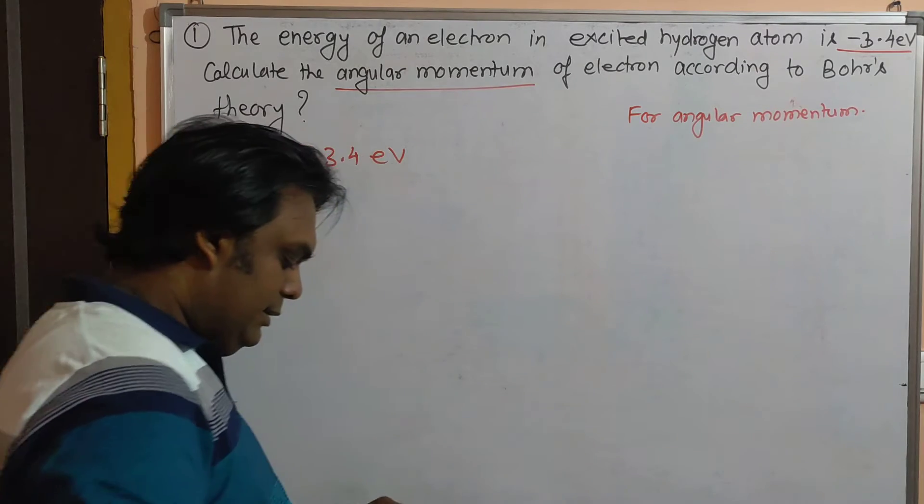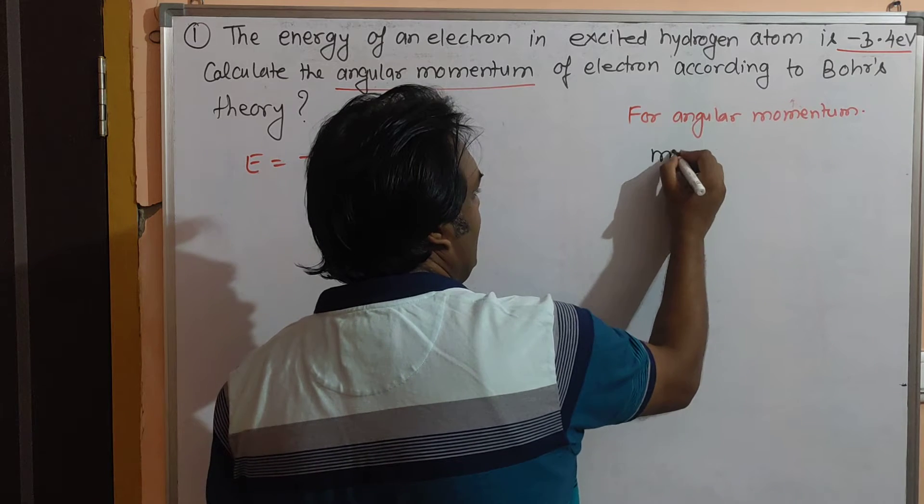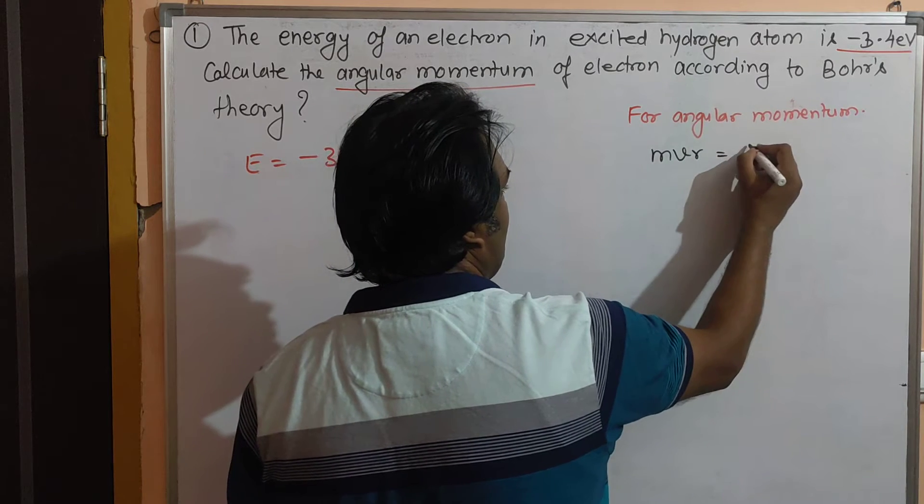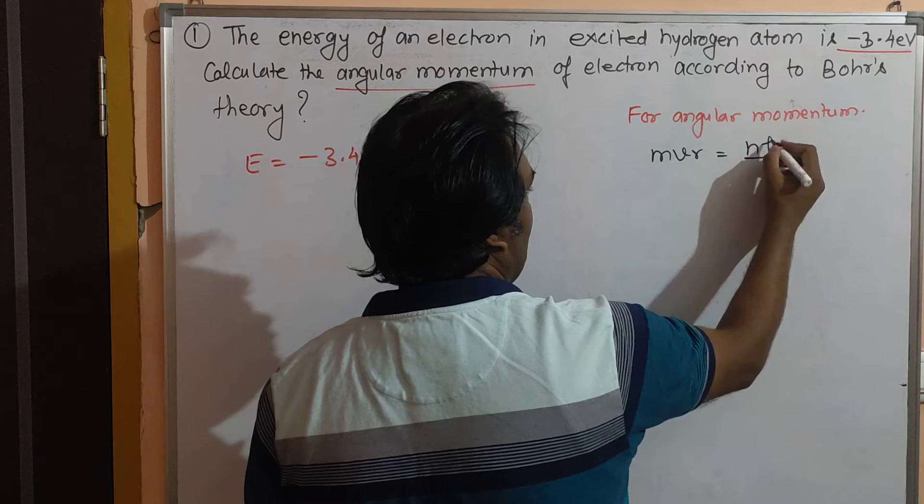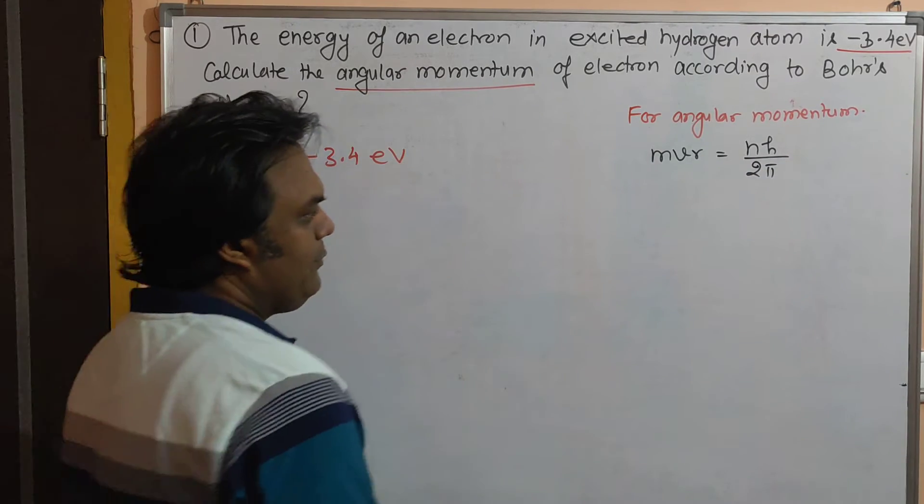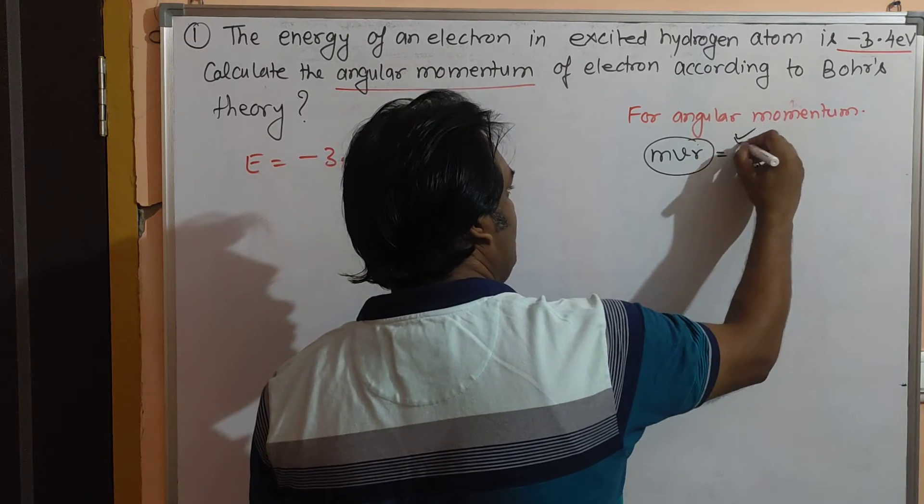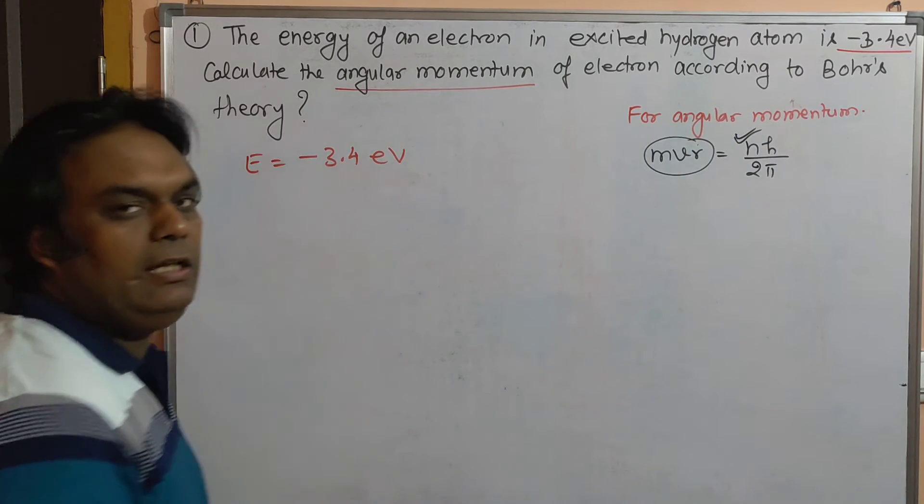For angular momentum, the first Bohr postulate says that angular momentum, MVR, is equal to integral multiple of h upon 2π. So if we need to calculate this, we need to know in which orbit the electron is.